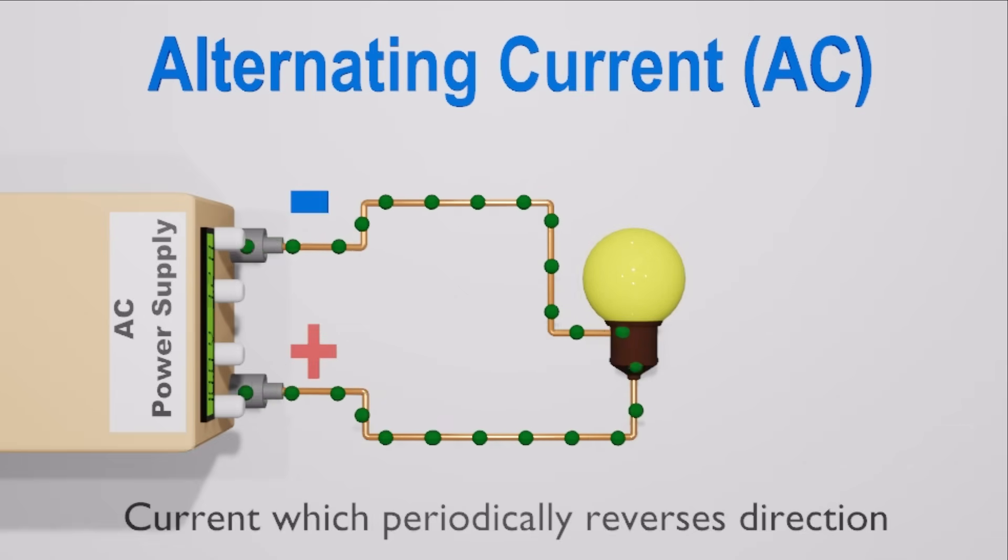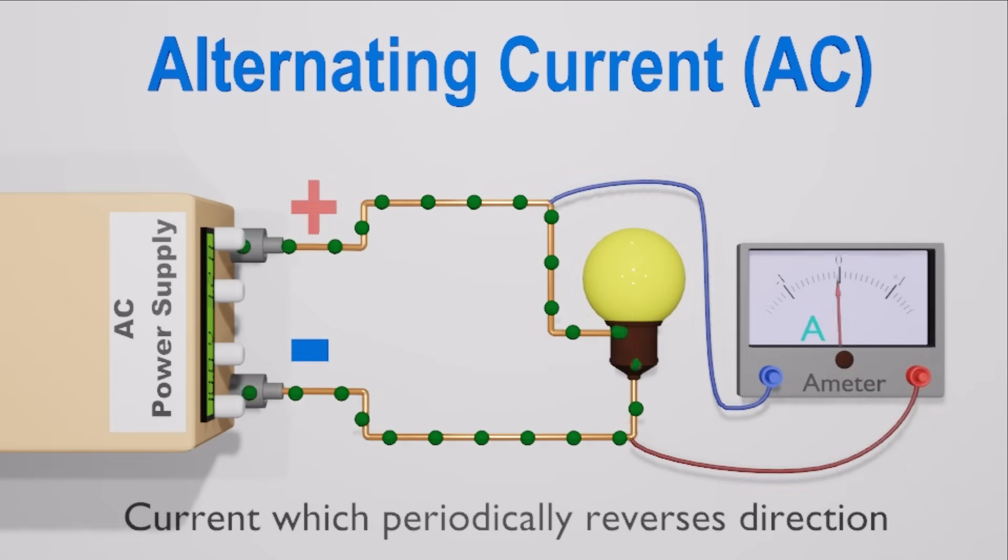AC constantly changes its flow between positive and negative terminals. This means that electrons also change their flow, following the negative to positive end as the polarity changes.